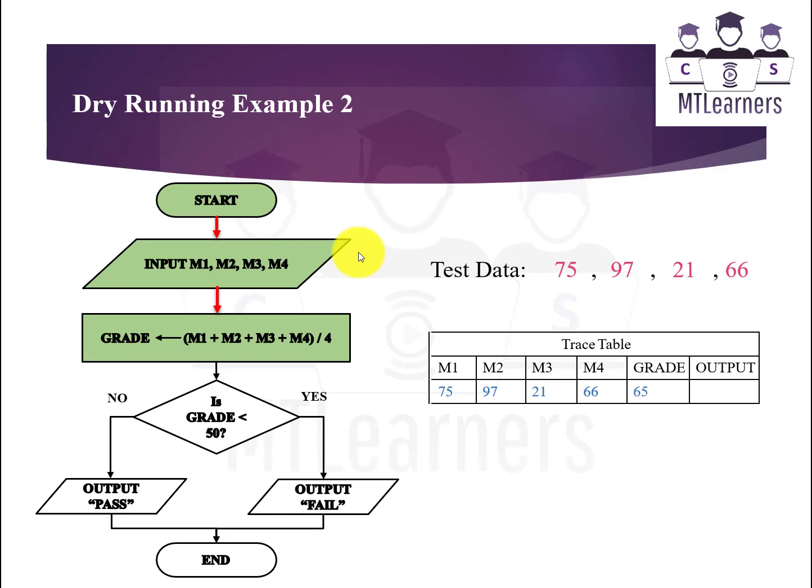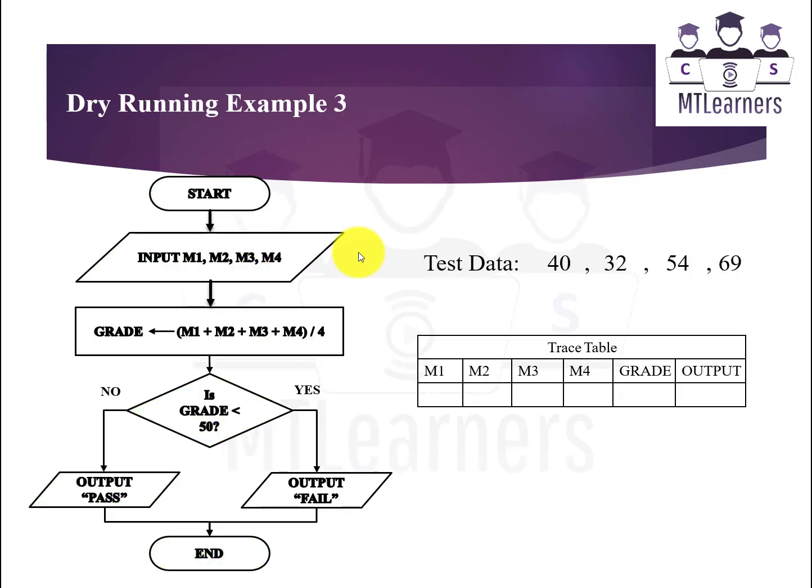Now is grade less than 50? You can see that grade is greater than 60, so it means it's no. In the case of no, it will move towards the output pass, and you will write pass under output column, and then end of the program.